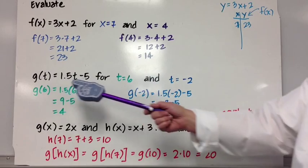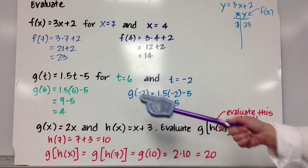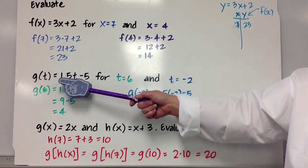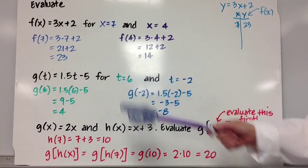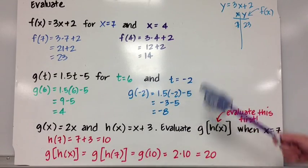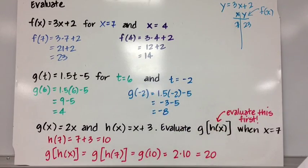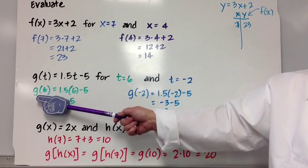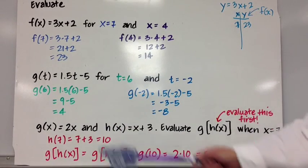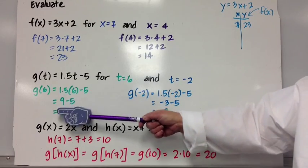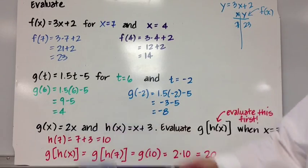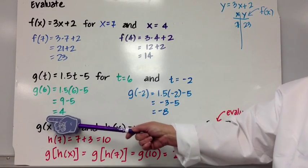g(t) = 1.5t - 5. We want to evaluate it for two conditions: t = 6 and t = -2. When t is 6, g(6) = 1.5 times 6 minus 5 = 9 - 5 = 4. So g(6) = 4.